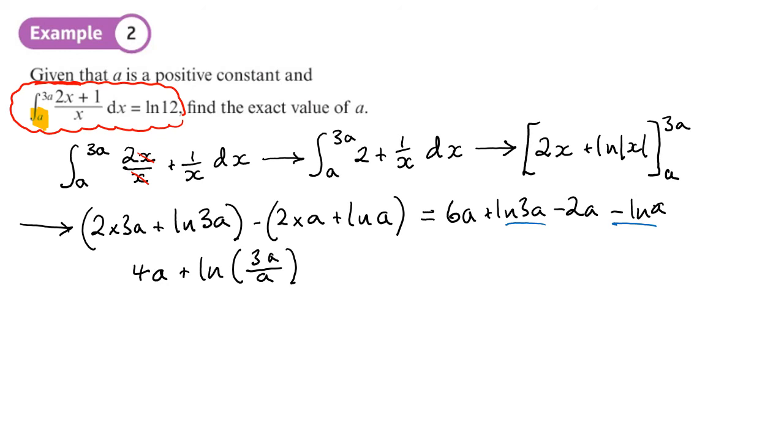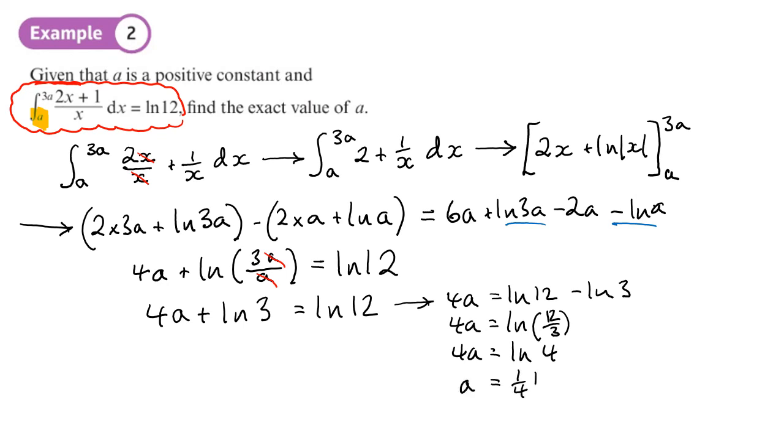We can go to the bit at the beginning of the question where it tells us that the value of this is log 12. So let's solve this. The a's cancel out, so what we end up with is 4a plus log 3 equals log 12. If we subtract log 3 from both sides, remember we're trying to find a, that becomes the log of 12 divided by 3. So 4a equals log 4. That means that a equals a quarter log 4, or log 4 all divided by 4. So there we go, we found the value of a.